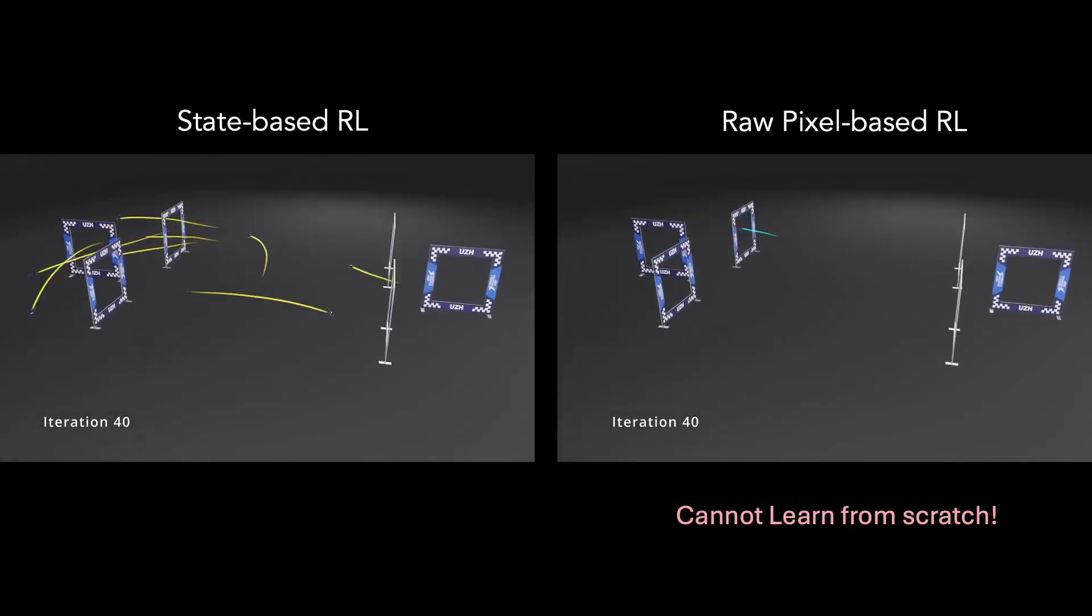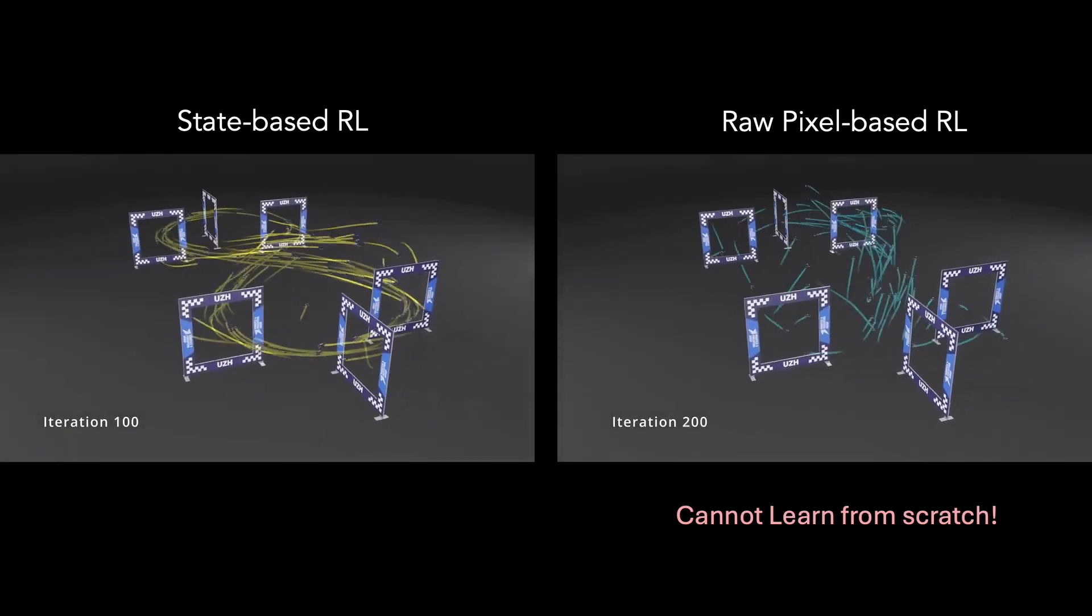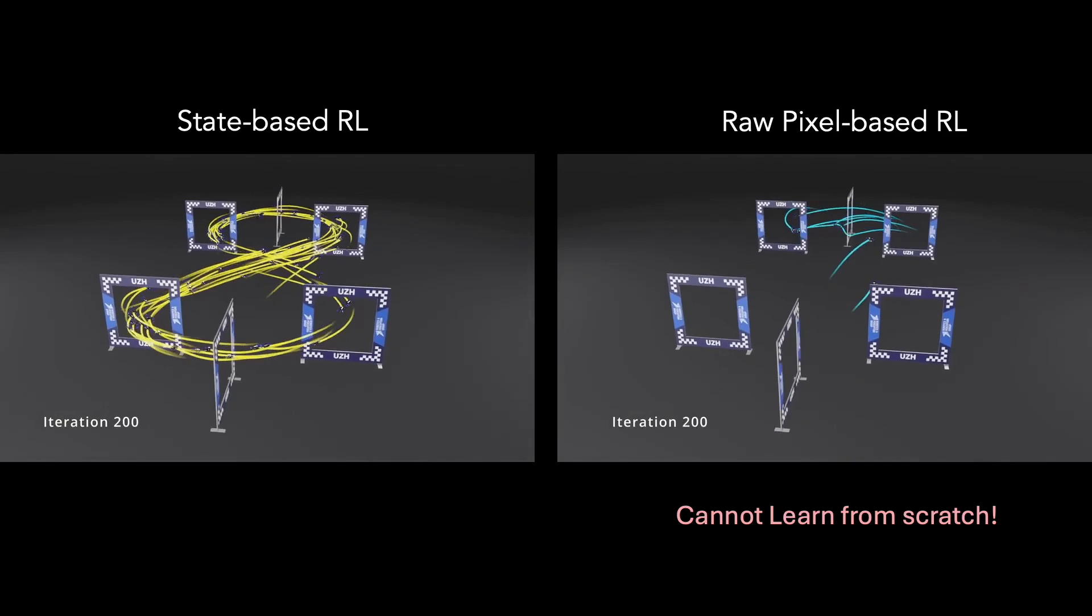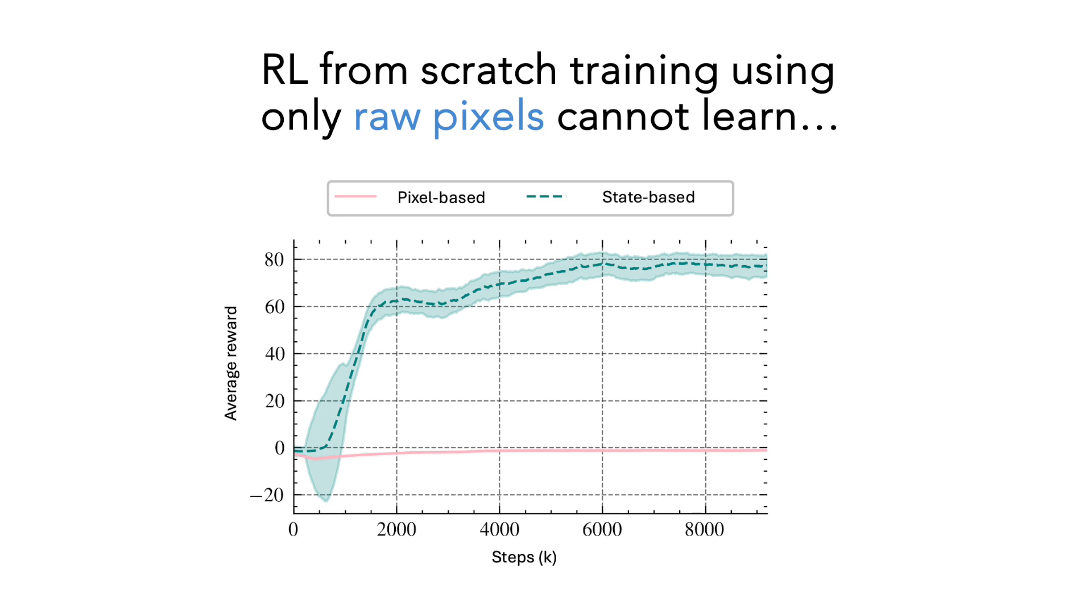Reinforcement learning from scratch is highly challenging due to the difficulty of exploration in a vast observation space, resulting in significant sample inefficiency. In fact, RL from scratch does not even learn using raw pixel input in our setting.